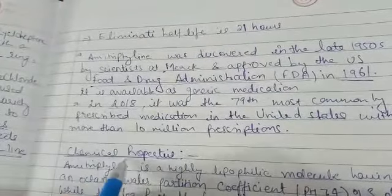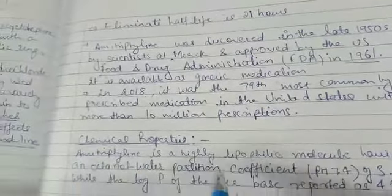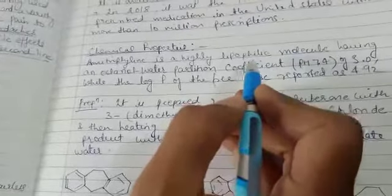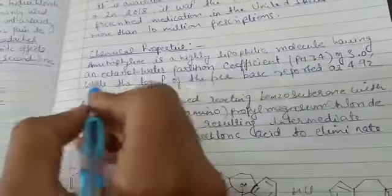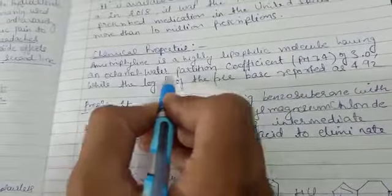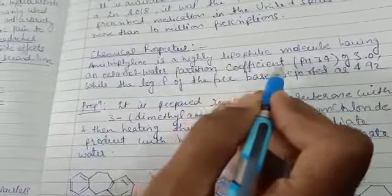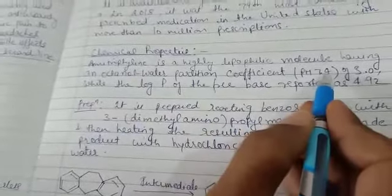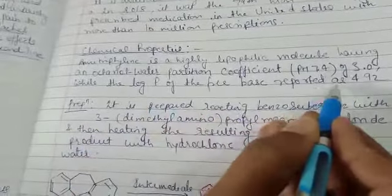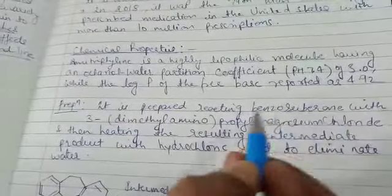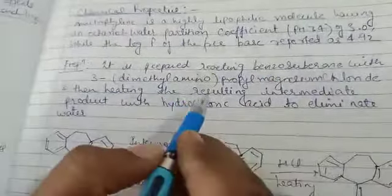Now come to the chemical properties of amitriptyline. Amitriptyline is a highly lipophilic molecule. Lipophilic means lipid-loving molecule having an octanol-water partition coefficient at pH 7.4 of 3, while the log P of the free base reported as 4.92.